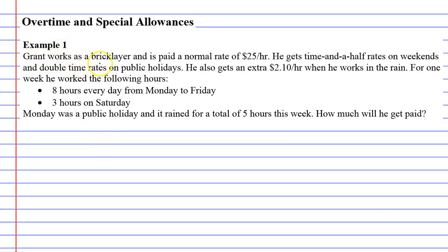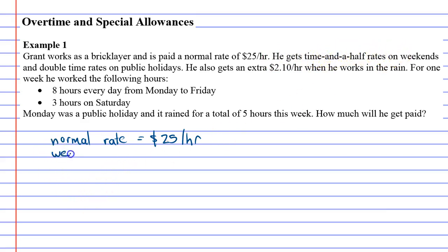Grant works as a bricklayer and is paid a normal rate of $25 an hour. Let's write little notes about this. First of all, he gets a normal rate of $25 an hour — that's his normal pay. He gets time-and-a-half rates on weekends, so on weekends he gets 25 times 1.5.